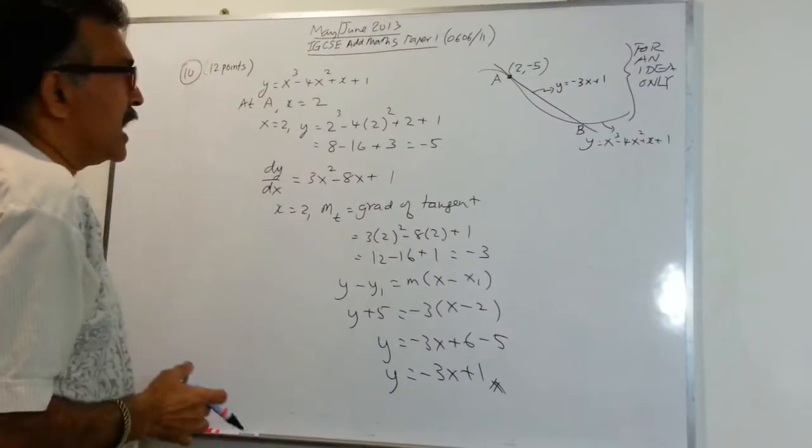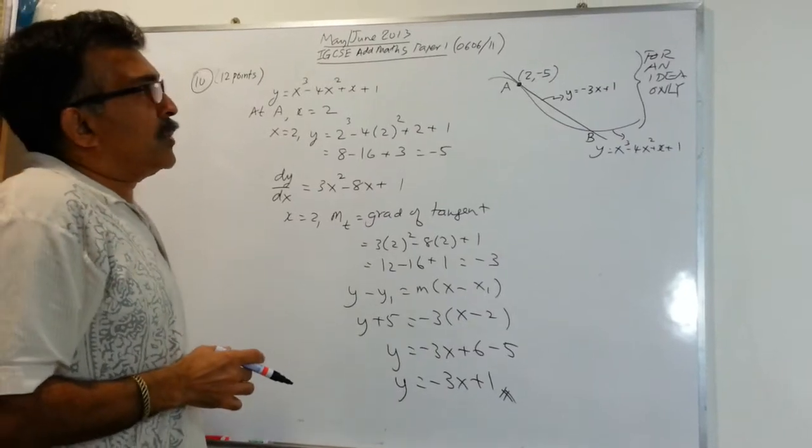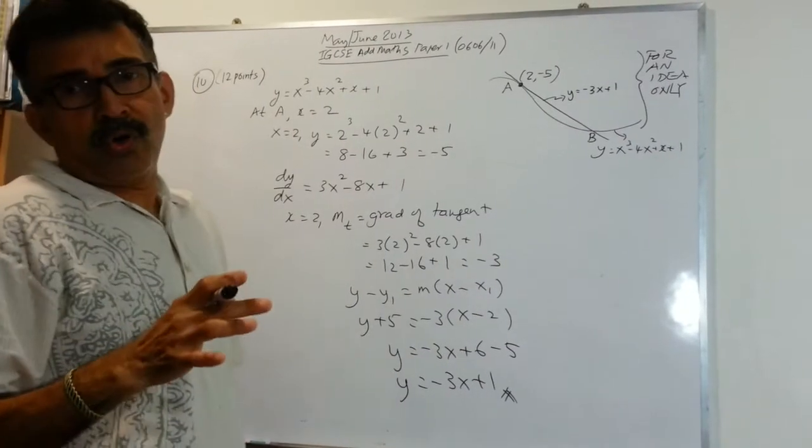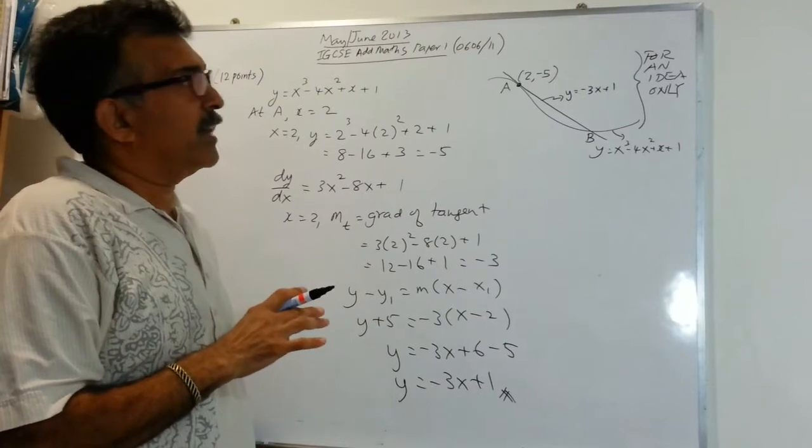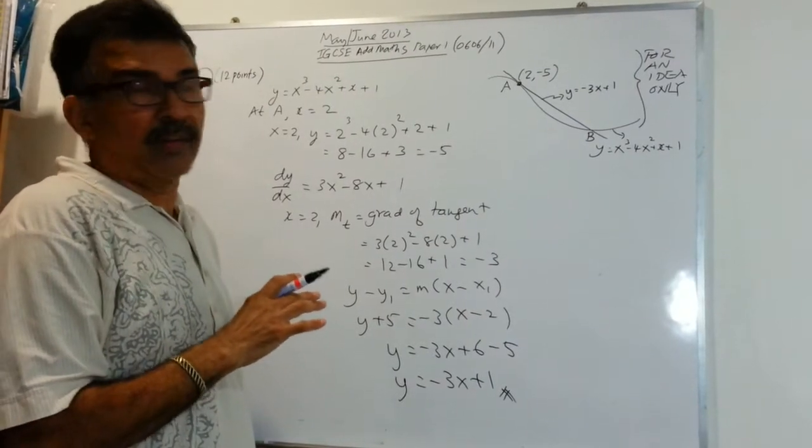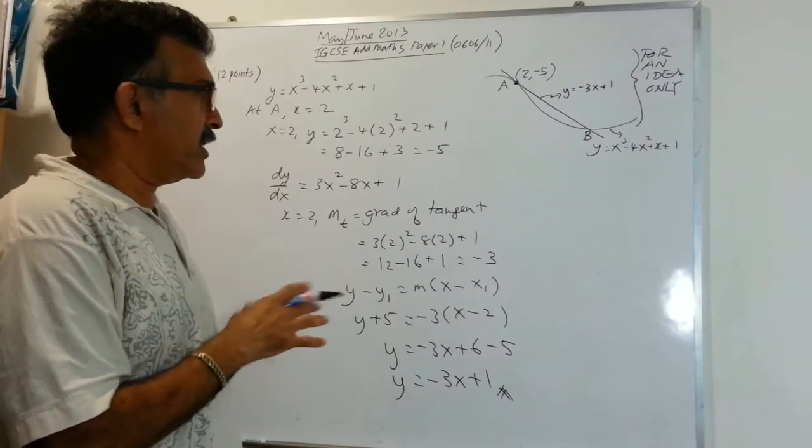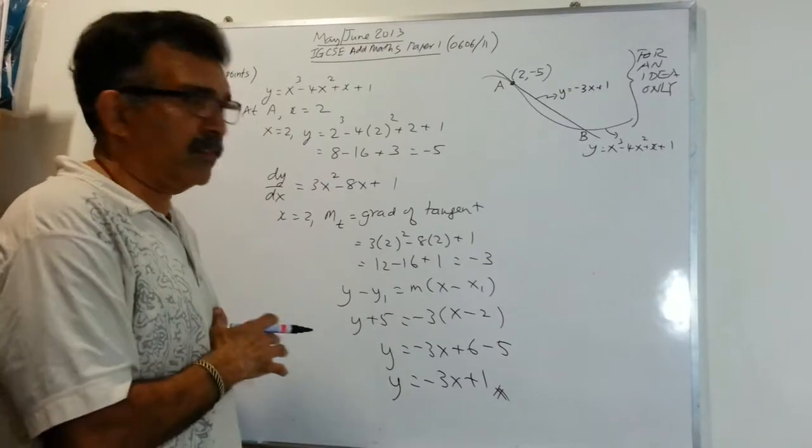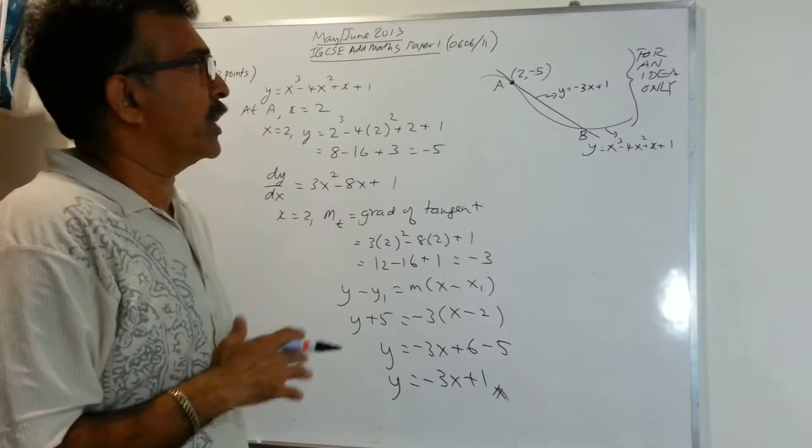The equation of the tangent is y equals negative 3x plus 1. Okay, great. So what was the important thing here? Do your differentiation carefully. Find the value of the y coordinate. Do that carefully as well. And the rest is using the equation of a straight line and cleaning up the numbers and getting your answer.